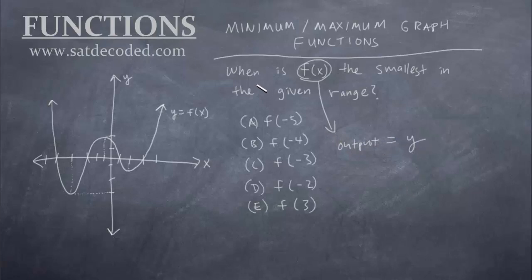So in other words, they're asking us, what is the smallest y? When is y the smallest in the given range? So if we look right here, remember, every point that makes up this curve has an ordered pair. And every ordered pair has both an x and a y value. Since we don't really care about the x right now, let's just talk about the y, because that's what we're solving for, the y value.